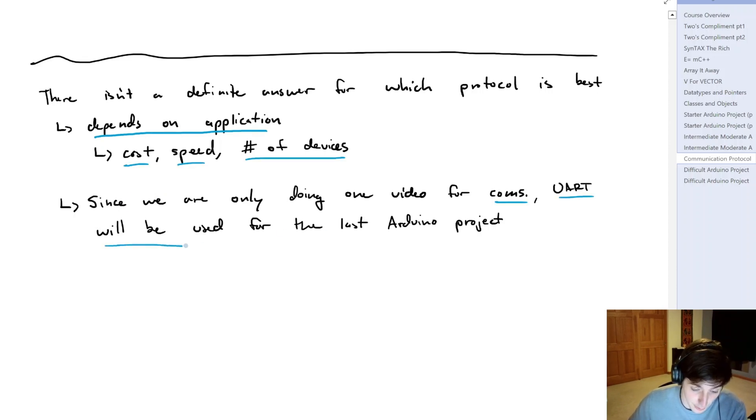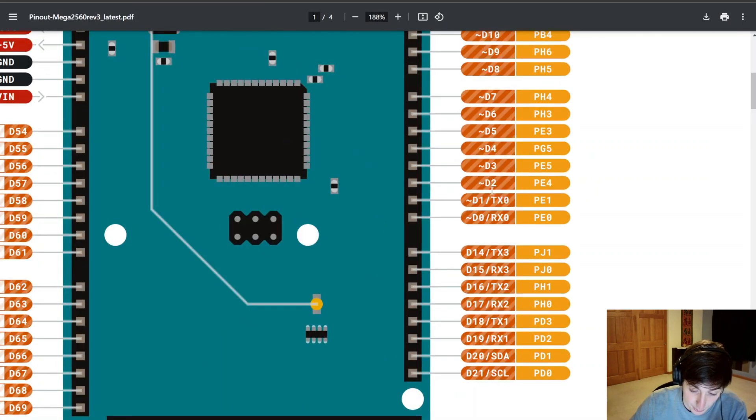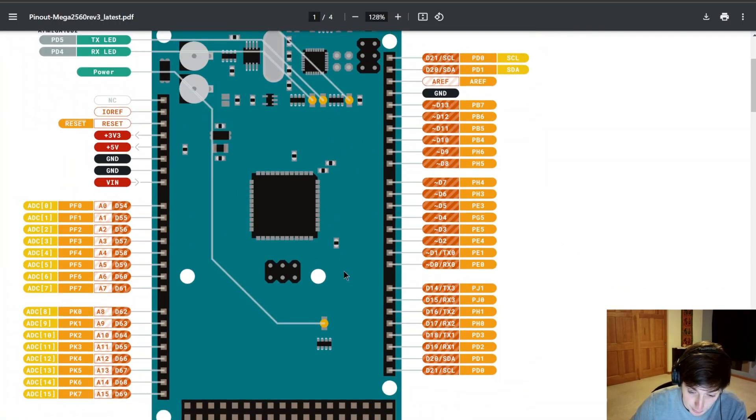And UART is actually what we're going to use on our last Arduino project. So if we go into the datasheets for the Arduinos, you can see here for the NanoEvery, we have an RX and TX. And if we look at the 2560, you can see that we have multiple RX and TX lines. You can also see here that we have the SDA and SCL lines. So if we wanted to implement another communication protocol, we could.